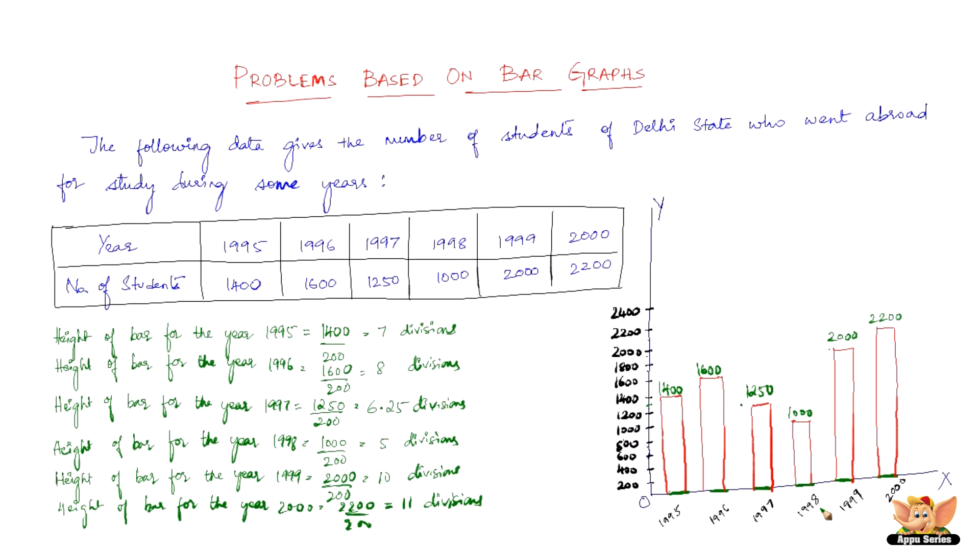So this is how we construct a bar graph. These calculations are very important to make the bar graph look really proportionate and accurate. It has to support the numbers that we write on top of the bars here. If it is 1000 it has to look 1000, it shouldn't look 2000. This ends an example problem on the construction and problems based on bar graphs.